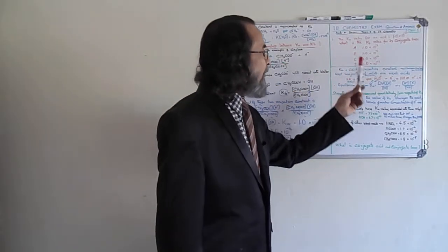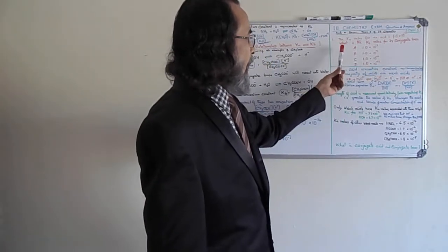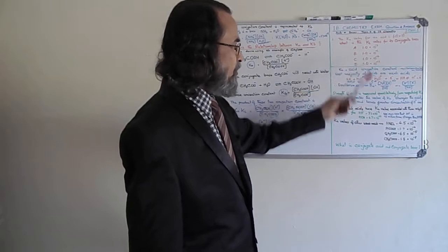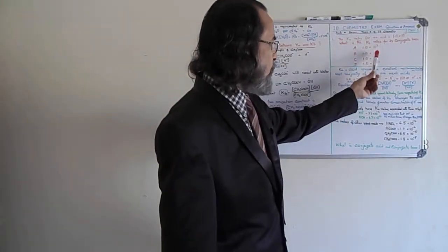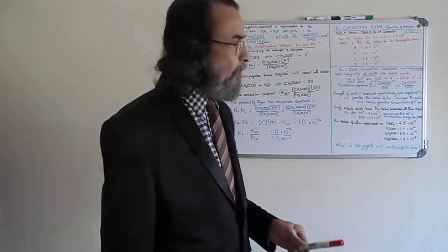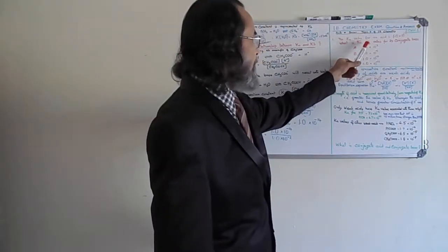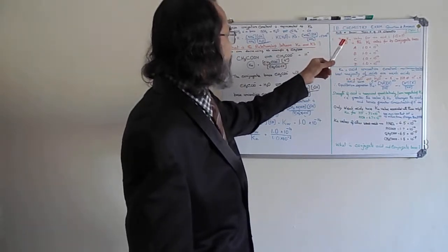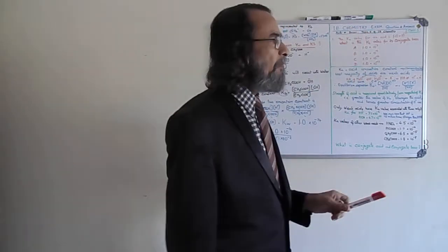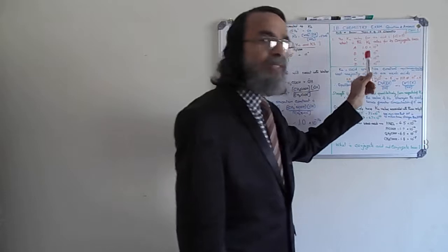The first question: the Ka value for an acid is 1 × 10⁻² — what is the Kb value for its conjugate base? We have four options: A) 10⁻², B) 10⁻⁶, C) 10⁻¹⁰, D) 10⁻¹². Students who know that Ka is the acid ionization constant, Kb is the base ionization constant, and the relationship Ka × Kb = Kw can answer within seconds.